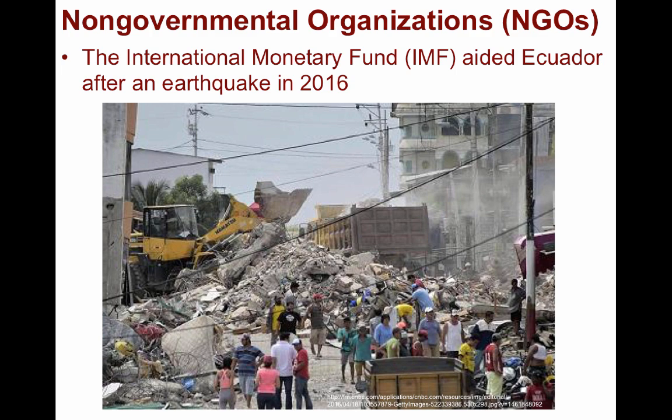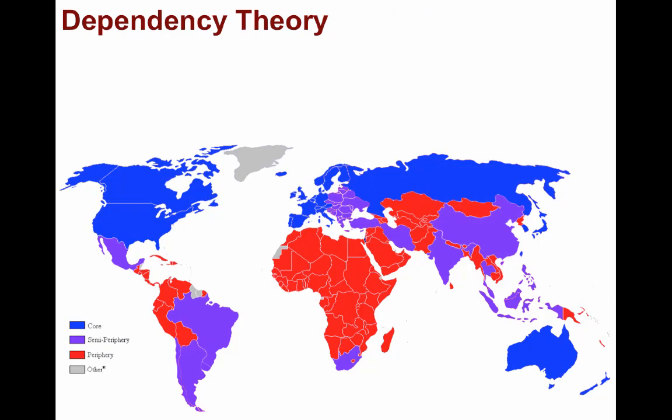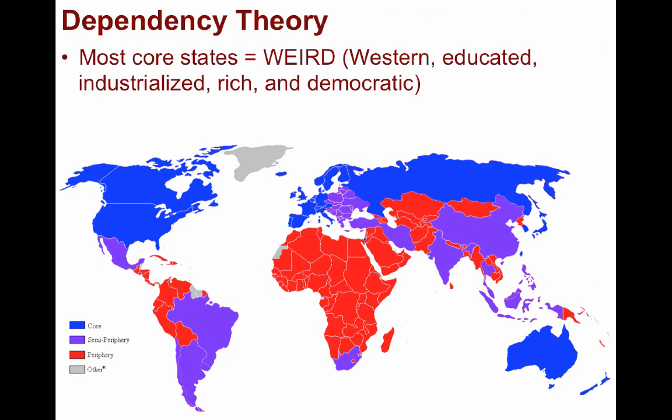A term has emerged to describe core states through the acronym WEIRD, standing for Western, Educated, Industrialized, Rich, and Democratic. Most core states fit this description, but the term also highlights how most populations residing in developing states are very different from those in the core. All told, the modernization model and dependency theory are based on generalizations about economic change and pay little attention to differences in culture, politics, society, and geography.